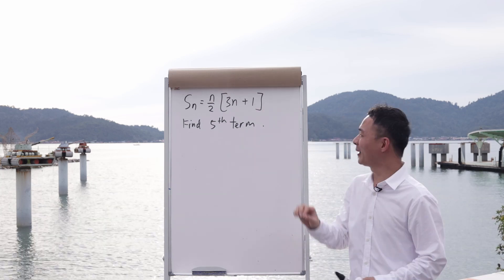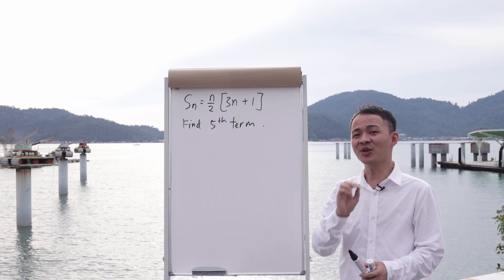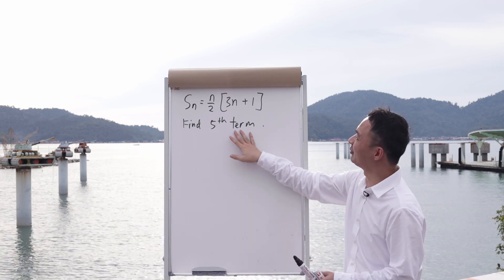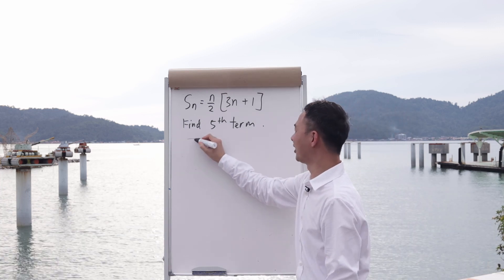The problem is this question doesn't ask you to find the sum of first n terms - it asks you to find the fifth term. So in order to find the fifth term t5, I will do s5 minus s4. Some students might ask why we do s5 minus s4.